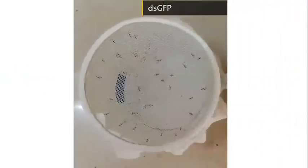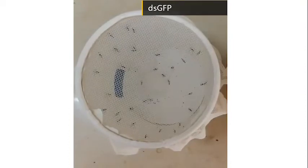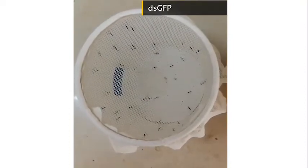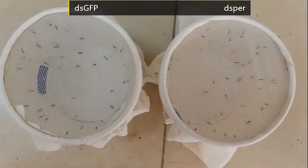In the lab, in group one, we did not suppress the clock genes, and mosquitoes swarm normally as they do in nature. In group two, we suppressed the clock genes, and mosquitoes did not swarm.